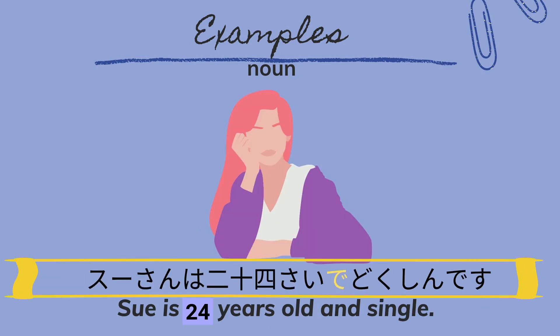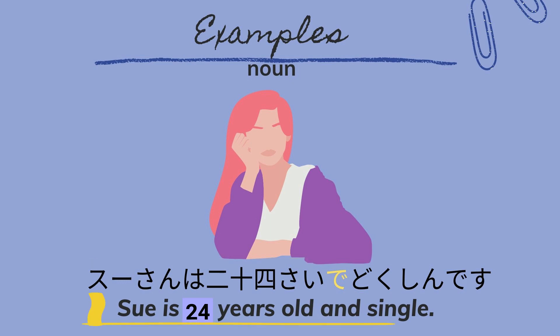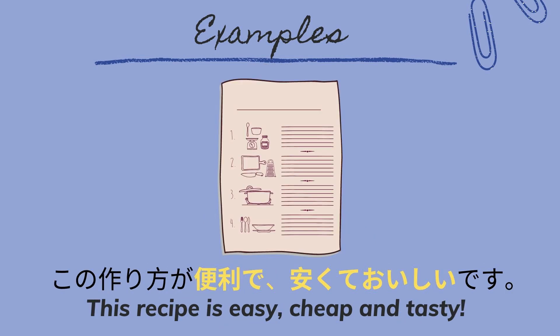Next is 'Su san wa nijuuyonsai de, dokushin desu,' meaning Su is 24 years old and single.